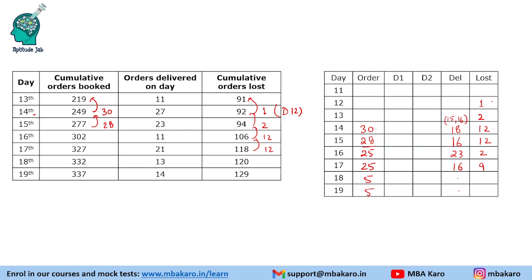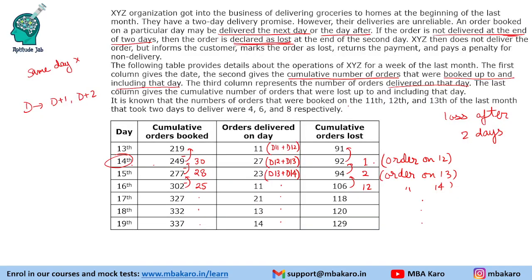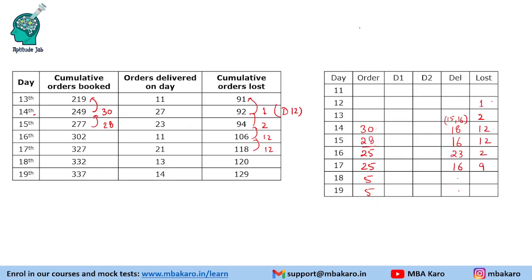We also use additional given information: orders booked on 11th, 12th, and 13th that took 2 days to deliver total 468. In our table, D1 means delivered the next day and D2 means delivered two days later. We will use the delivered column and this additional data together to get the remaining values in our table.